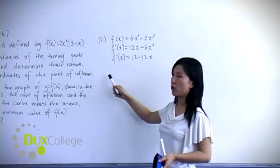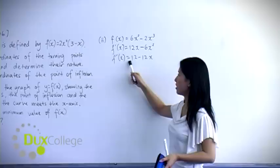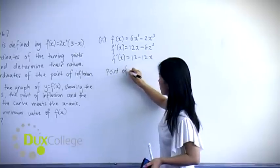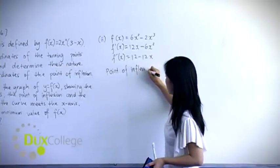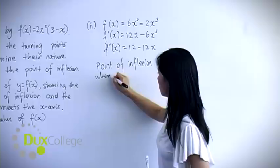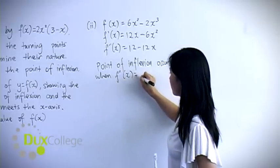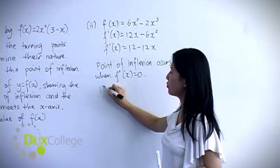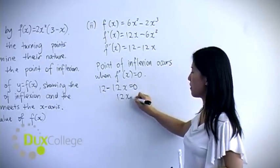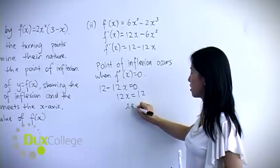The point of inflection occurs when f''(x) = 0. So you have 12 - 12x = 0, which is 12x = 12, so x = 1.